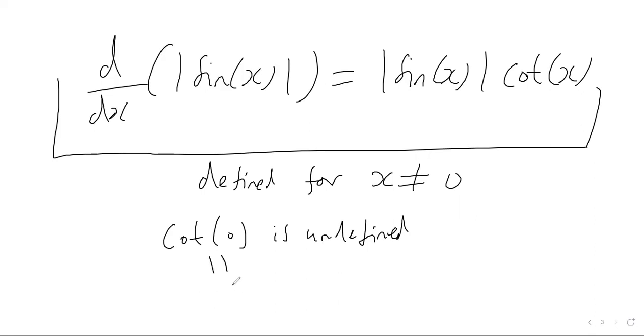That's because cot of zero equals cosine of zero over sine of zero. Therefore, this derivative can't be defined for values of x equal to zero. But for all other values of x, this derivative does hold true.